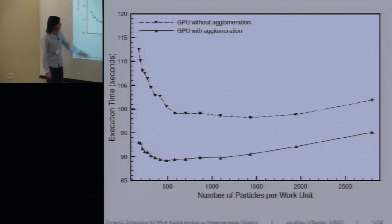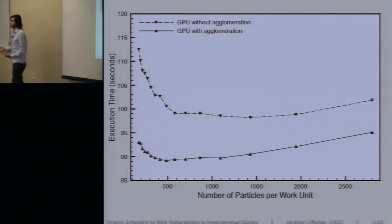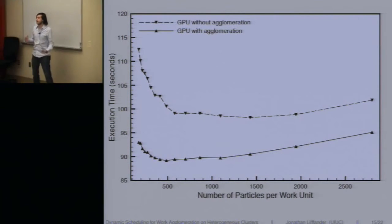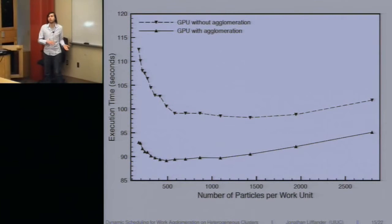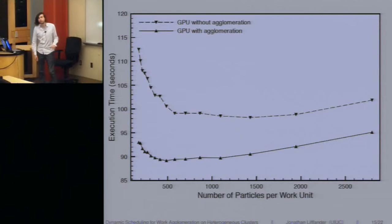But even when they're fine-grain, we're able to tolerate a lot finer-grain work units because we're effectively agglomerating them in the system. Also, the best point here, which is around 490, is different than the best point over here, which is around 1,400 or so. So we can tolerate a finer-grain work unit, and we don't have to adapt our work unit size to match the GPU. Instead, we could use what was better for the CPU and still get even better performance out of the GPU.